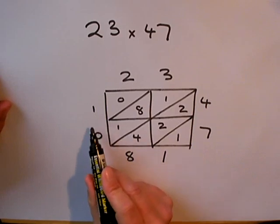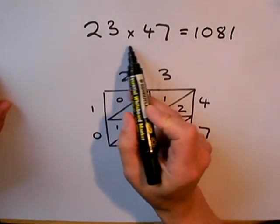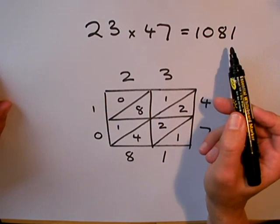So, my final answer is 1,081. 23 multiplied by 47 is 1,081.